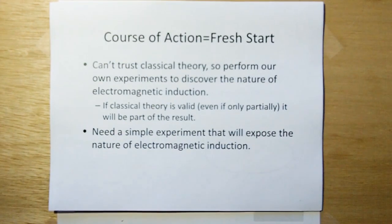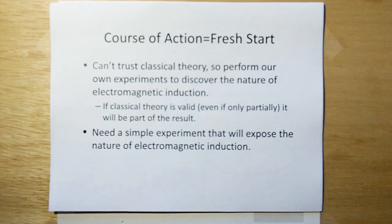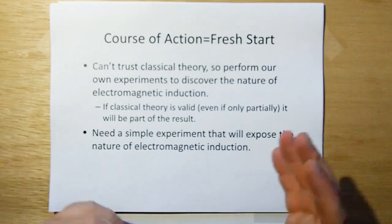So the course of action I took 20 years ago was a fresh start. Let's assume that theory is completely wrong. Let's not use it in any way, and let's just do some experiments and try to figure out what the true nature of induction is. If classical theory is valid, even only partially, it will be part of the result.